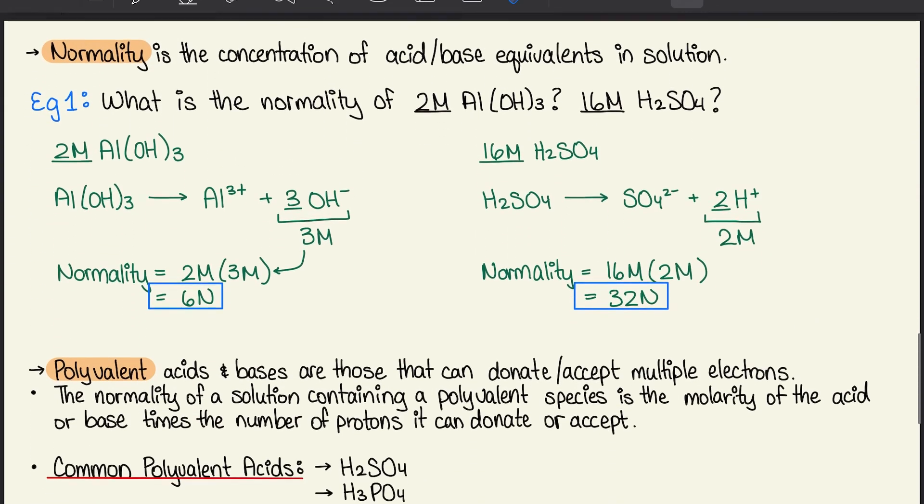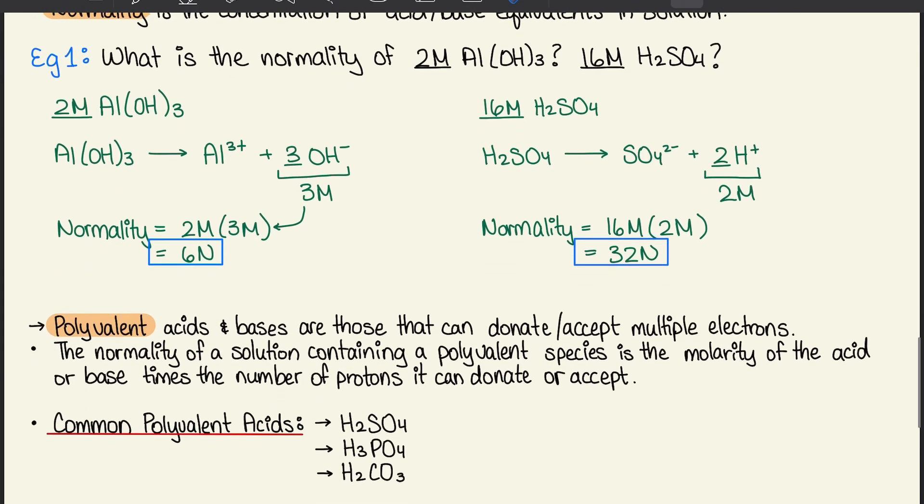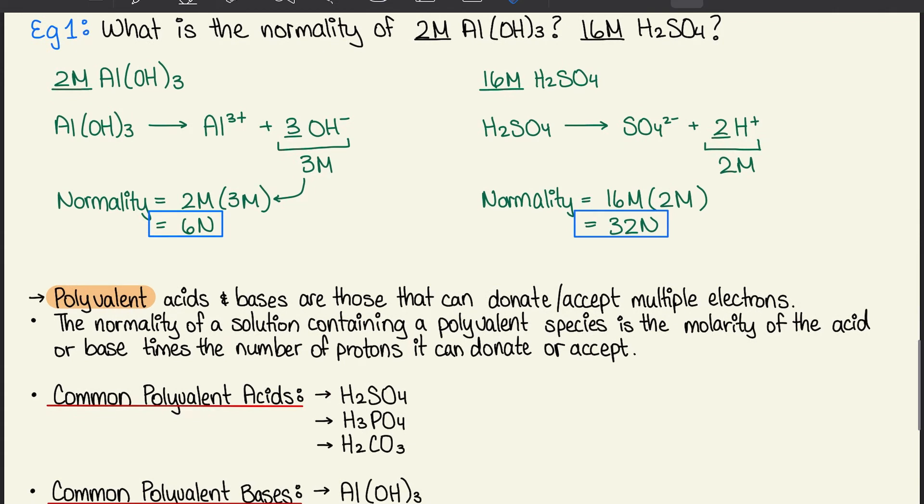Normality is the concentration of acid-base equivalents in a solution. In the example we have here, it's asking: what is the normality of 2 moles of Al(OH)3 or 16 moles of H2SO4? When we have 2 moles of Al(OH)3, we dissociate that with Al3+ plus hydroxide ions. Once we balance that out, we know there's 3 moles of hydroxide ions in the products.